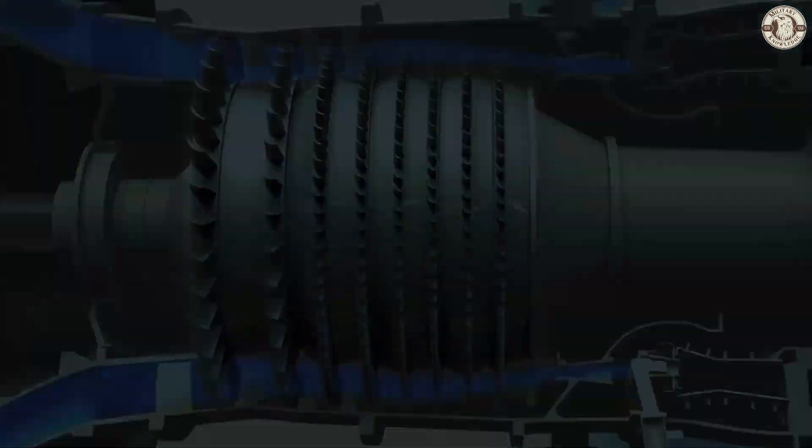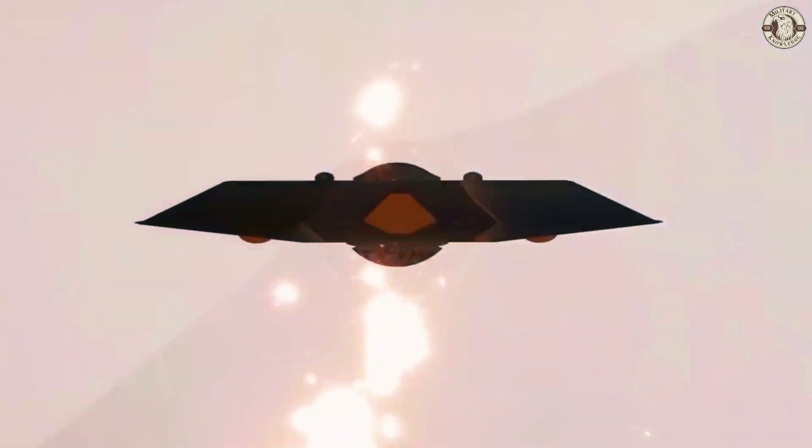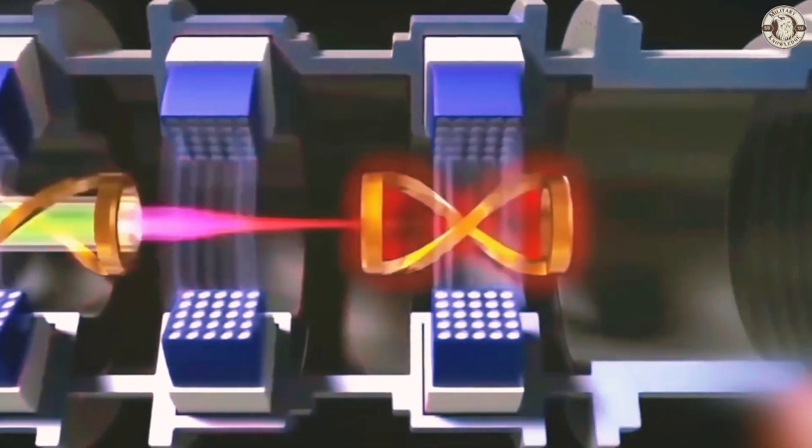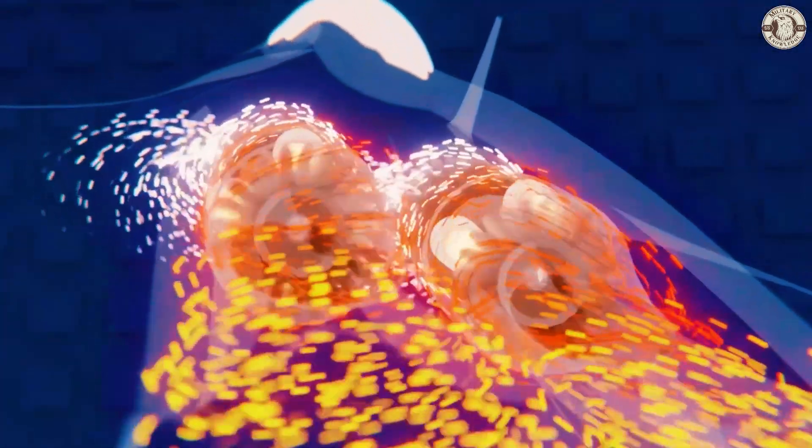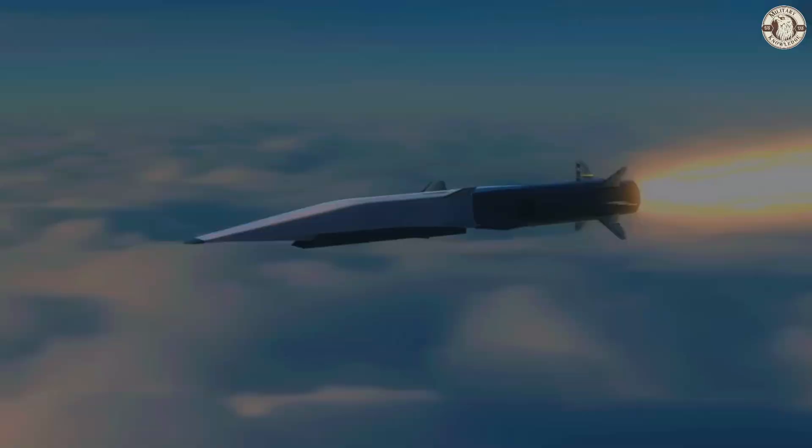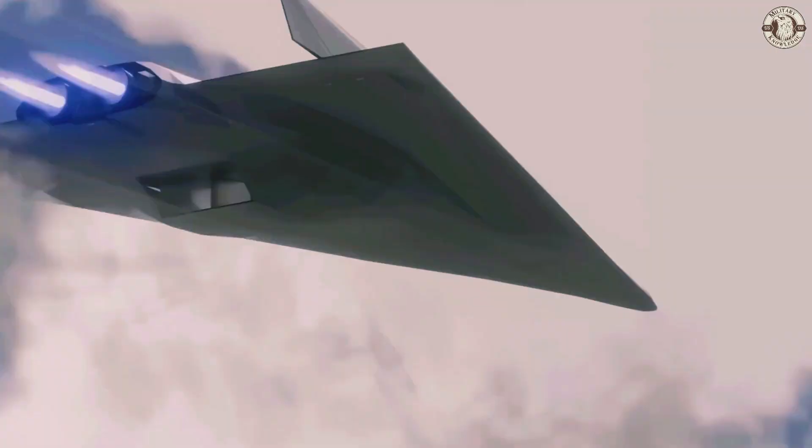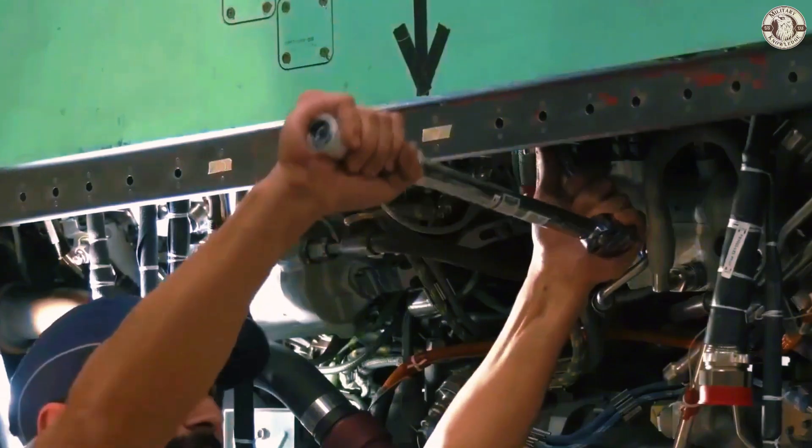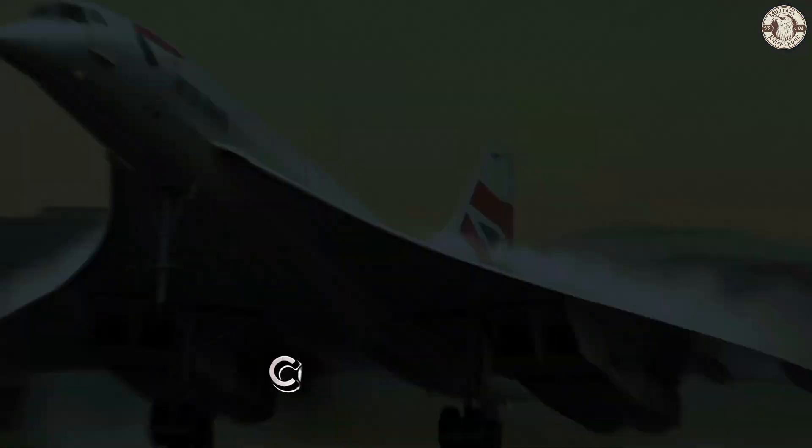But here's where I start scratching my head a bit. As cool as the X-1 sounds, we've got some unanswered questions. I mean, we're still trying to figure out how to keep these hypersonic jets from melting under the extreme heat they generate at Mach 5. We're talking about temperatures so hot that it could melt steel if you're not careful. Sure, Musk has his secret sauce, but let's not pretend there aren't some serious engineering challenges here.